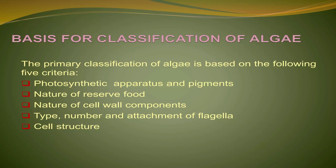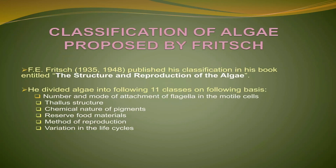Next, we know about Fritsch. Fritsch is a well-known algologist. He has published two volumes of books on the structure and the reproduction of algae. His classification is based on the following characters: first pigmentation, the detail of flagella, reserve food, presence and absence of true nucleus in the cells, the range of thallus structures, methods of reproduction, and patterns of life cycles.